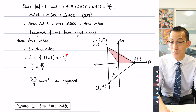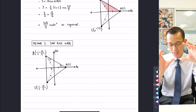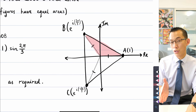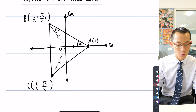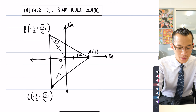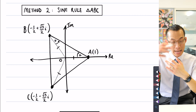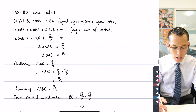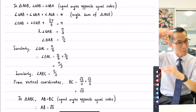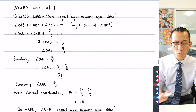So that's how I get the required area: the 3/2 comes from tripling, and the root 3 over 2 comes from sine of 2π/3. Now for the second method — instead of writing the complex numbers a, b, c in exponential form, several students wrote them in rectangular form. The reason that's helpful is it allows you to work out key lengths like BC using the rectangular coordinates. From the vertical coordinates, BC spans from positive root 3 over 2 to negative root 3 over 2, so adding their magnitudes gives root 3.